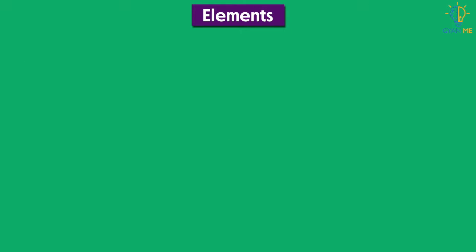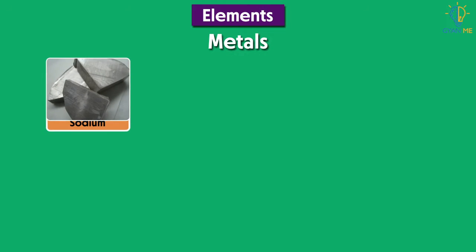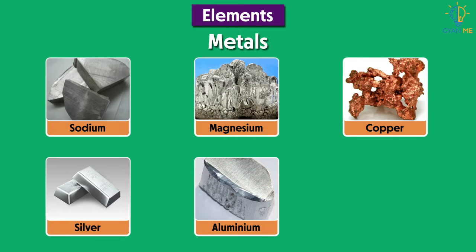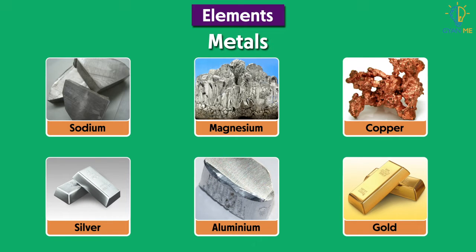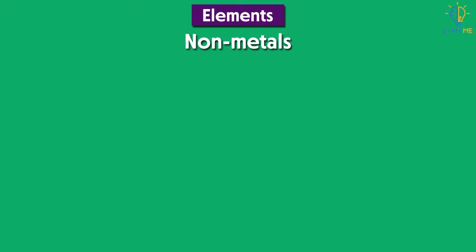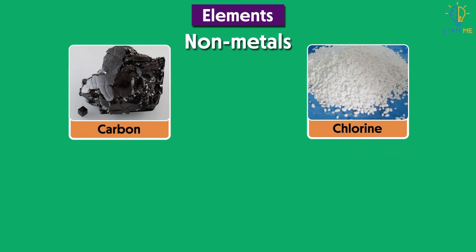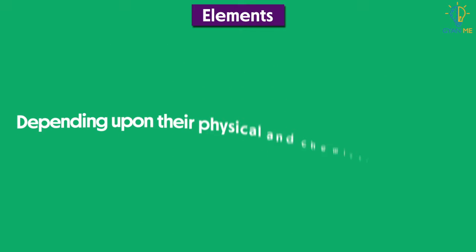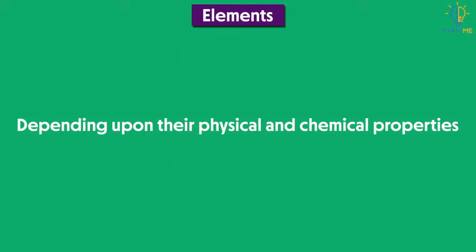So we can classify these elements into metals — for example sodium, magnesium, copper, silver, aluminium, gold, etc. — and non-metals — for example carbon, chlorine, bromine, etc. — depending upon their physical and chemical properties. We will study physical and chemical properties of metals and non-metals throughout this chapter.